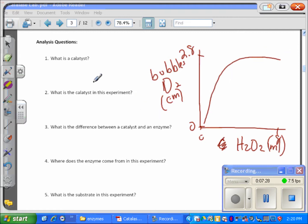What is a catalyst? A catalyst is something that speeds up a chemical reaction. The catalyst in this experiment is catalase. The difference between a catalyst and an enzyme: they're the same except that an enzyme is made in a living thing, so an enzyme is a biological catalyst.